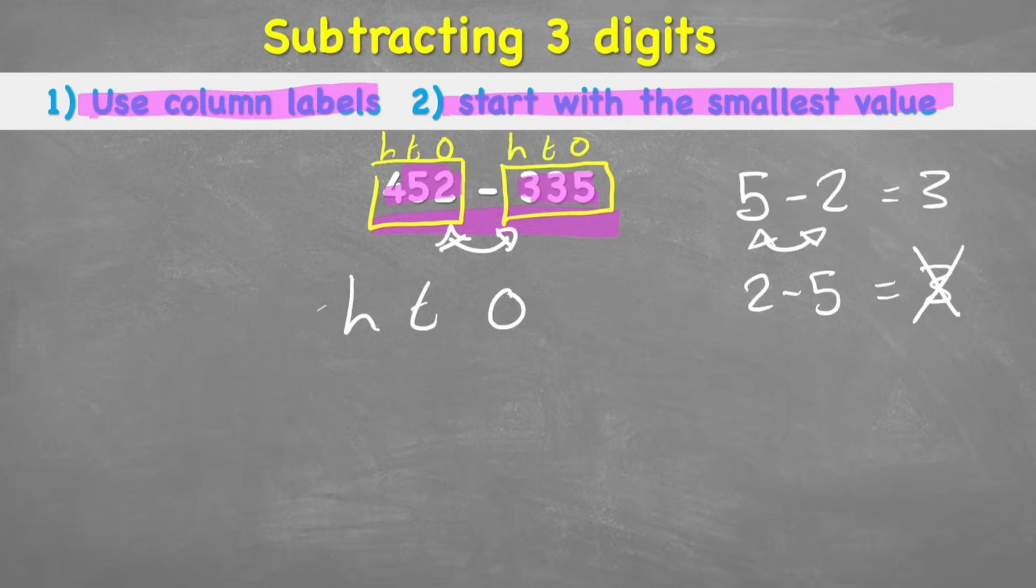Therefore, it's super important which way round we put these numbers in our question or in our columns. So the question reads 452 subtract 335. So that means I have to start with my 452 on the top, and I'm subtracting 335.